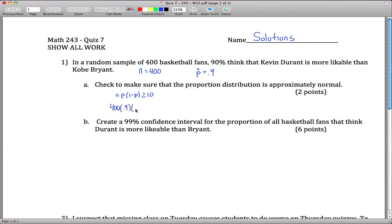400 times 0.9 times 0.1, which is 1 minus 0.9, and that is equal to 36, which sure enough is greater than or equal to 10, so good, we're done with that criteria.